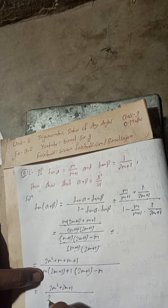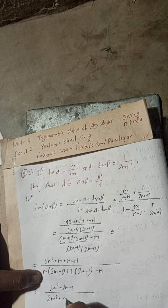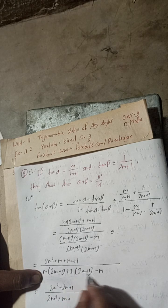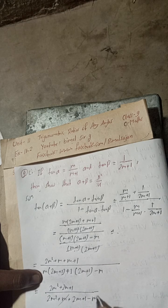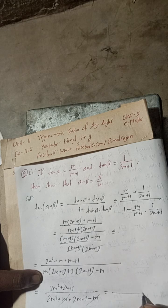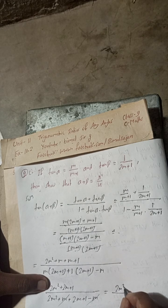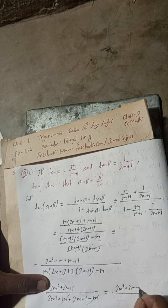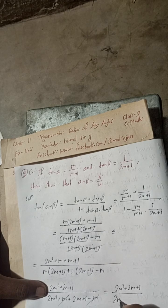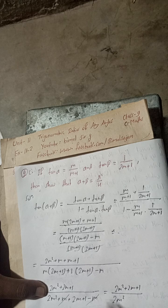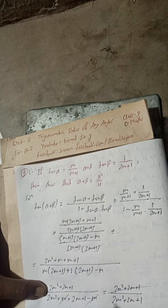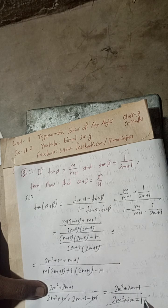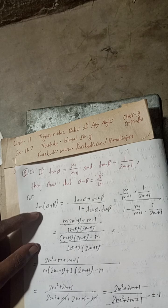Minus m + m, minus m cancels, plus 2m + 1. This is 2m² plus 2m plus 1. You can see here both are the same, numerator and denominator, so you can cancel all, equals 1.